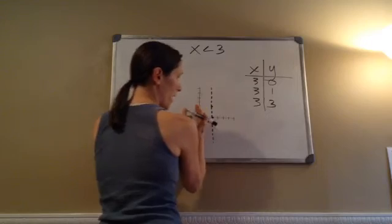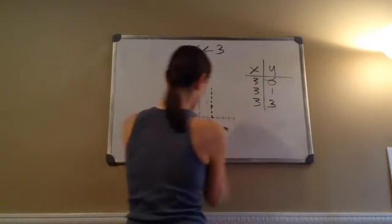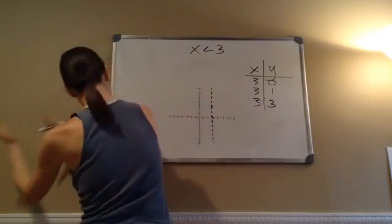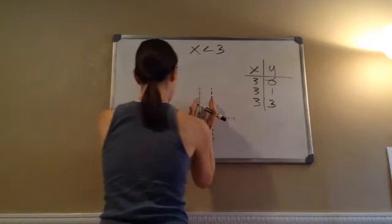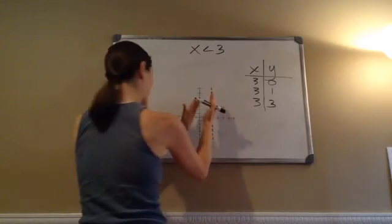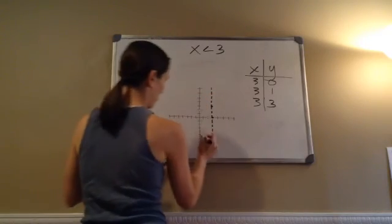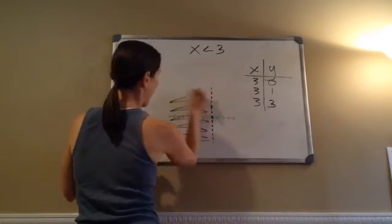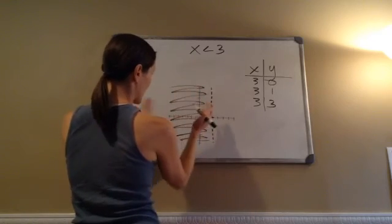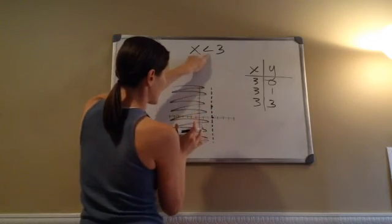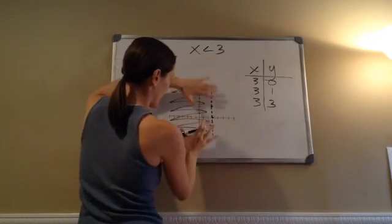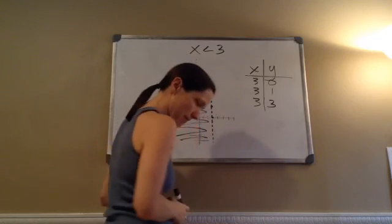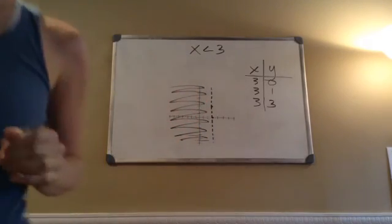Well, thinking about positive numbers 1, 2, 3, 4, 5, 6, 7 going all the way, and negative numbers — less than on this side means this way. So x is less than 3: the shaded part is less than 3. And that is Lesson 115.